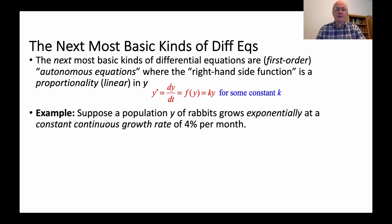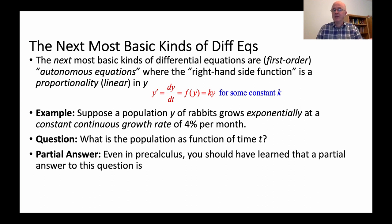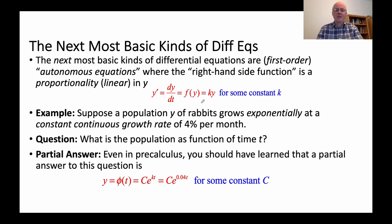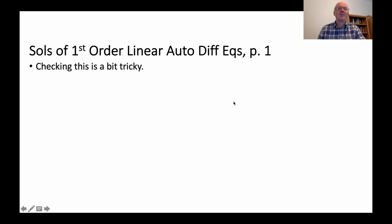For example, suppose you have a population y of rabbits that grows exponentially at a constant continuous growth rate of 4% per month. What's the population as a function of time? If you've taken pre-calculus, you should already know the partial answer: exponential growth with base e, where k = 0.04 is the multiplier of t in the exponent. Now in differential equations we need to ask: do these functions really satisfy the differential equation? Are they solutions? First, think about whether the model makes intuitive sense — the more rabbits there are, the more baby rabbits there are.